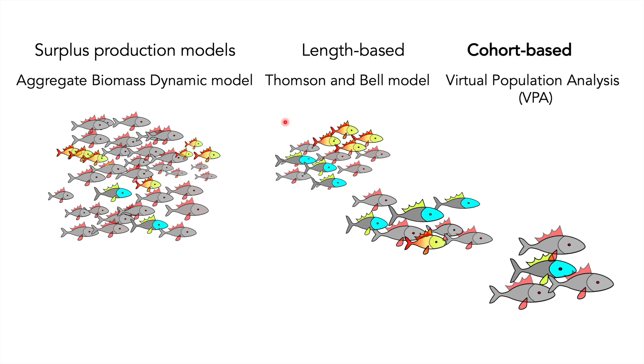Lastly, cohort-based methods take this a step further and divide the stock into age groups. The advantage of using age in addition to length is that it enables a better understanding of the growth rate of the stock and continues to provide resolution when fish have reached their maximum length. An example of this is virtual population analysis or VPA.